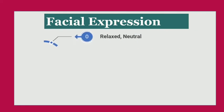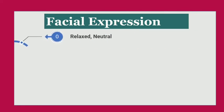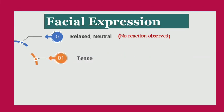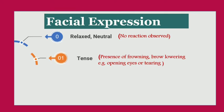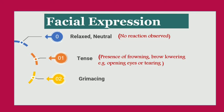The first parameter is facial expression. Score zero is given if the patient is relaxed or neutral — no reaction will be observed. Score one is given for a patient who is tense, identified by the presence of frowning, brow lowering, or tearing. Score two is given if the patient is grimacing — all reactions will be seen plus the eyelids will be tightly closed.